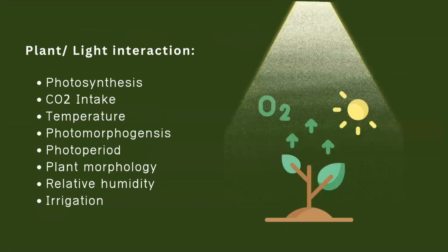We can list many more processes affected by light, such as CO2 intake, temperature, photomorphogenesis, photoperiod, plant morphology, relative humidity, and even irrigation.